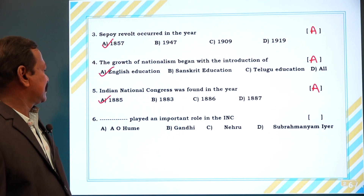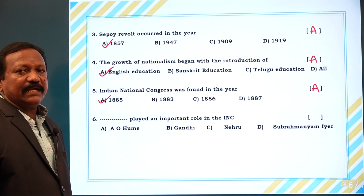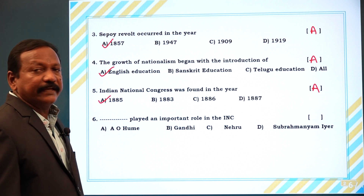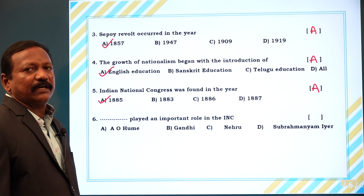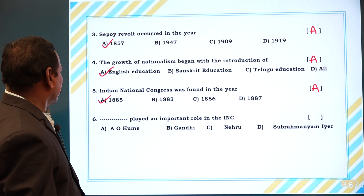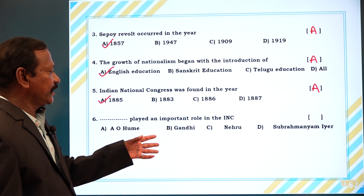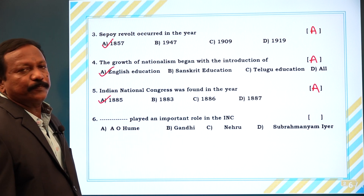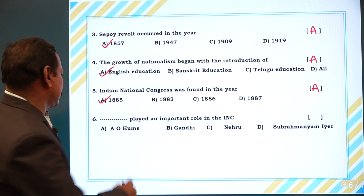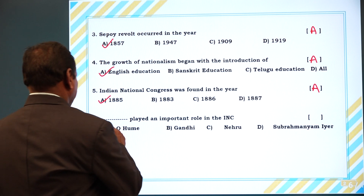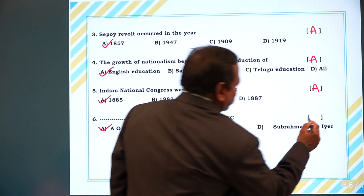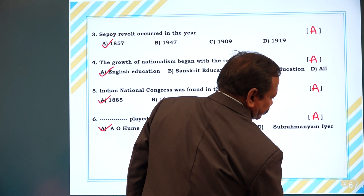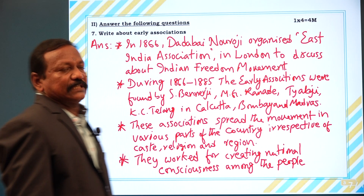Sixth question: Dash played an important role in the Indian National Congress (INC) — A. Evoque, B. Gandhi, C. Nehru, D. Subramaniam Iyer. Answer is A.